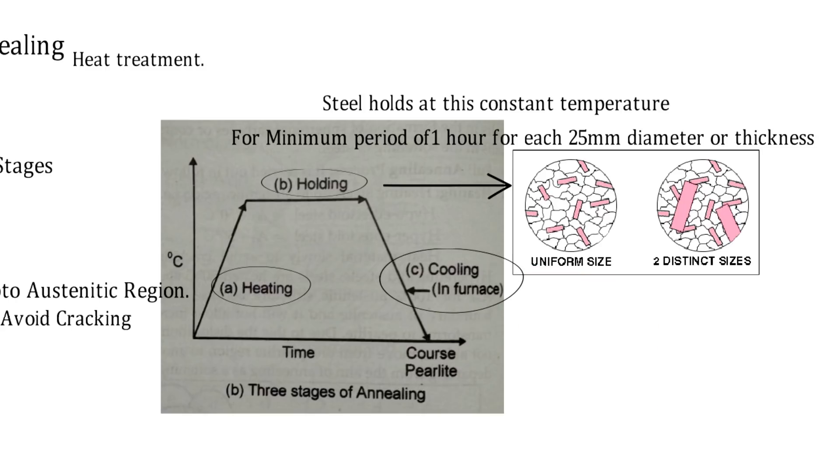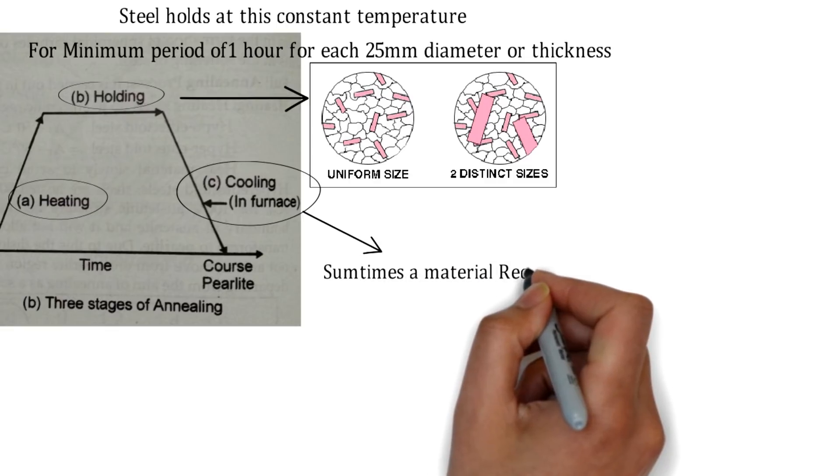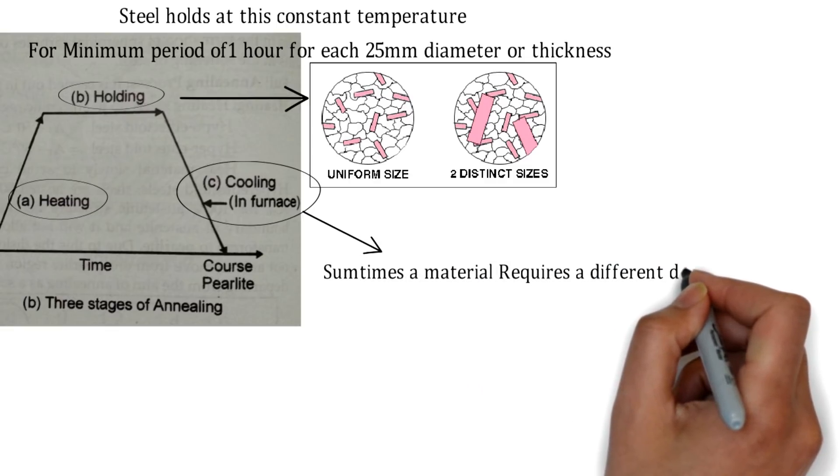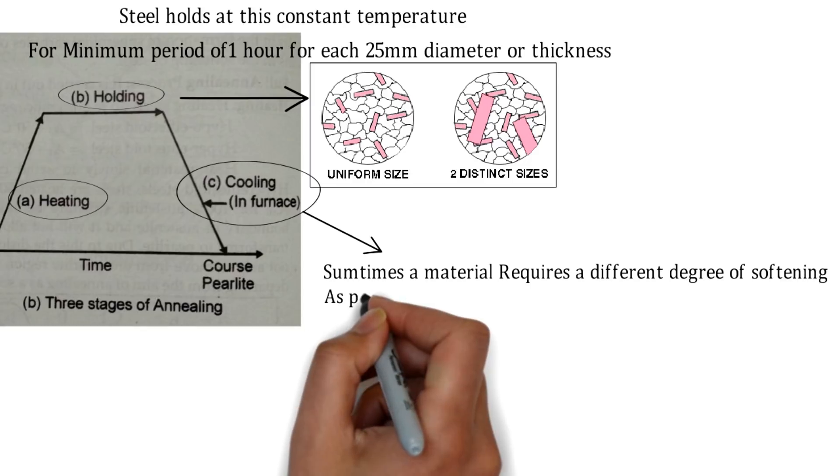Then the last one is the cooling process, which is done in the furnace itself. Sometimes a metal requires a different degree of softening, which might depend upon the application.